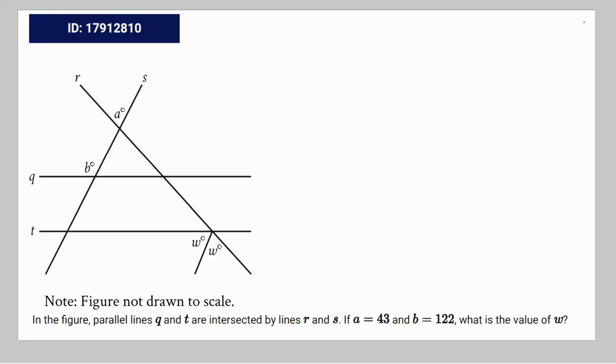Okay, so we have this geometry and trig question. In the figure, parallel lines Q and T are intersected by lines R and S. If A is equal to 43 and B is equal to 122, what is the value of W?